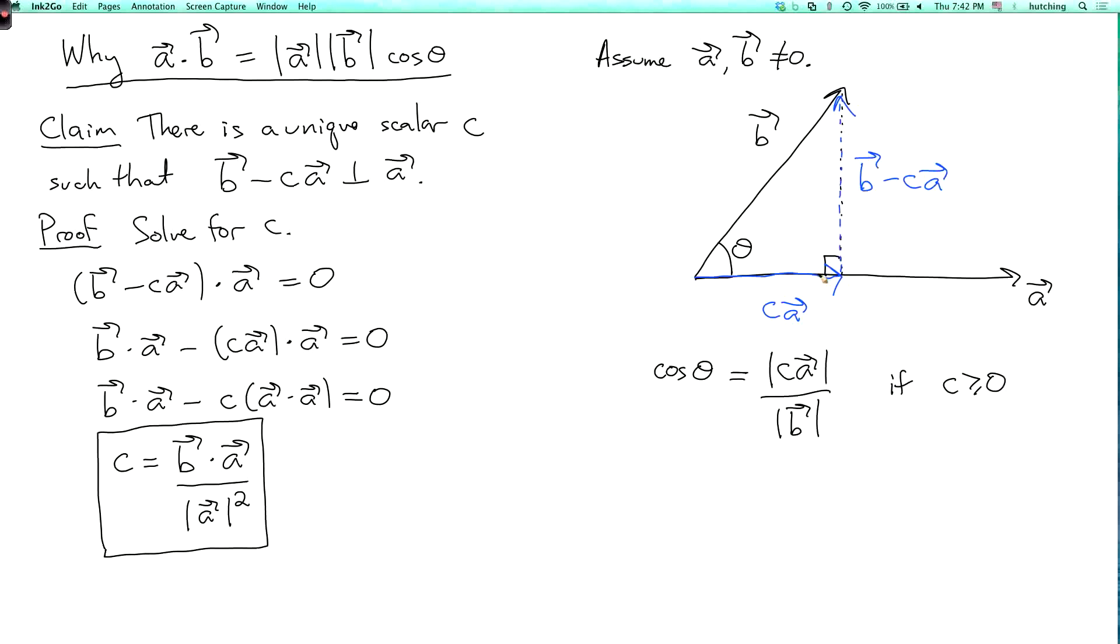If c is less than zero, then the angle is going to be more than pi over two, and the cosine is going to be negative. So the cosine of theta is minus the length of c a over the length of b if c is less than or equal to zero.